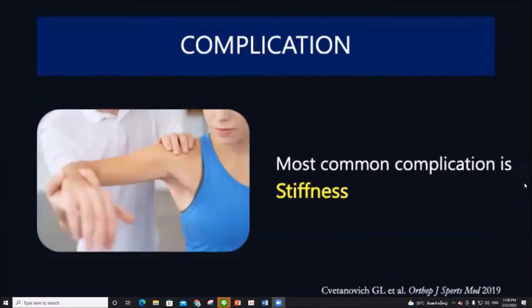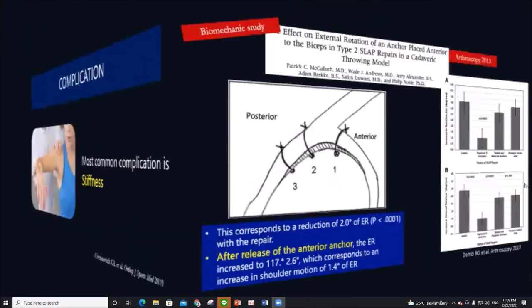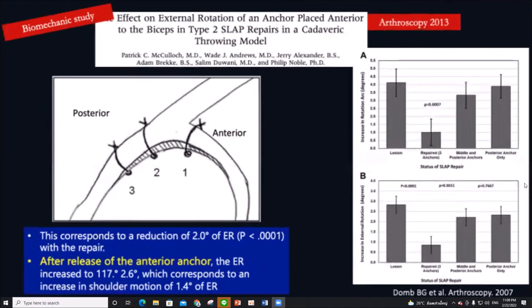The most common complication is stiffness, which may result from placement of an anterior anchor, as shown in this diagram, having the greatest effect on external rotation.